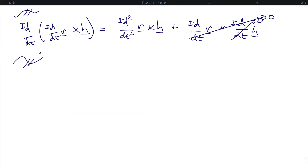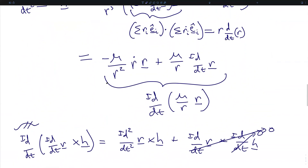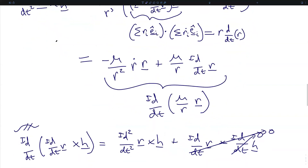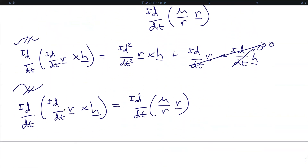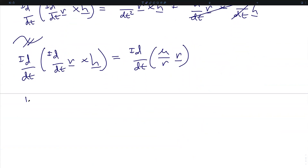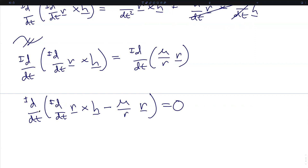We now take this result and return back to our previous expression. What we have done is replaced the second derivative of r crossed with h with the equivalent expression — the first derivative of (ṙ × h) — and set that equal to the resulting right-hand side, which is the first derivative of mu over scalar r in the r vector direction. If we rearrange things and bring this over to the left-hand side, we get that the derivative of the quantity (ṙ × h − mu/r · r̂) is all equal to zero.